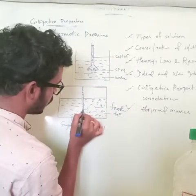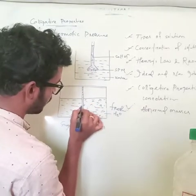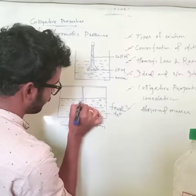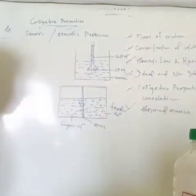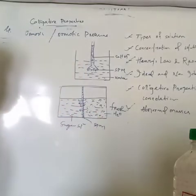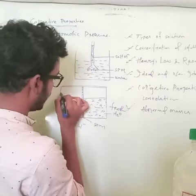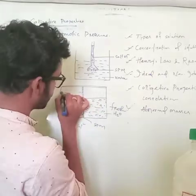Solvent molecules will flow through the membrane from the pure water side to the sugar solution side. After some time, the level on the solution side will increase.